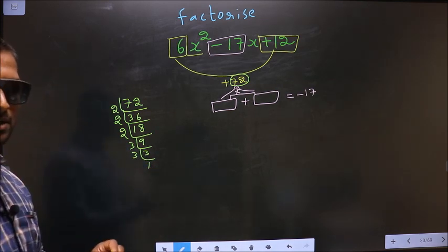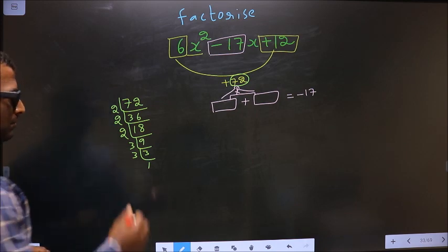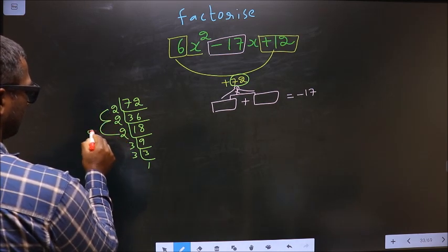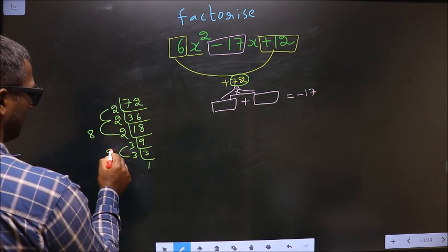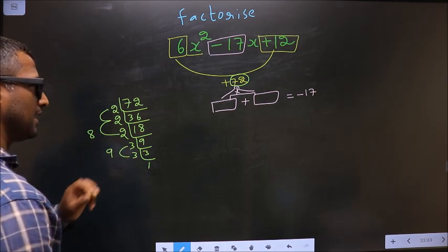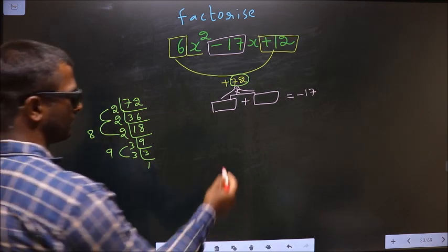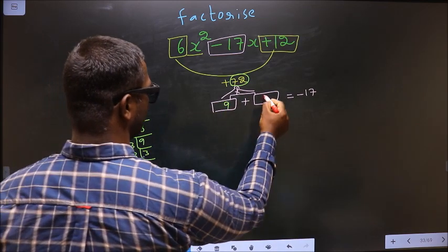Now the two numbers should be 2 into 2 is 4, 4 into 2 is 8, 3 into 3 is 9. So 8 plus 9 is 17, 8 into 9 is 72. So now I write 9 here, 9 here, 8 here.